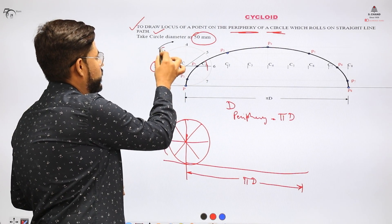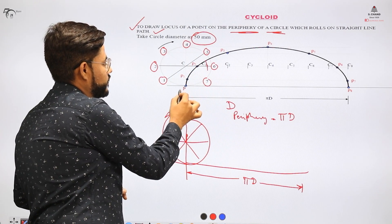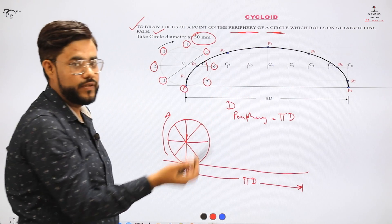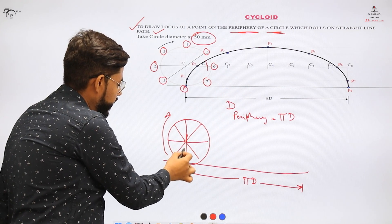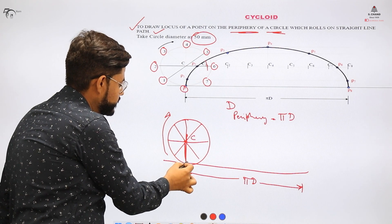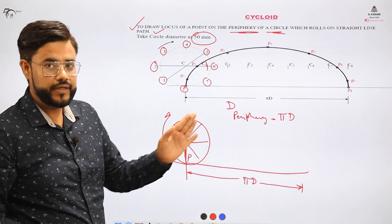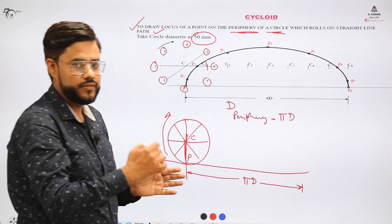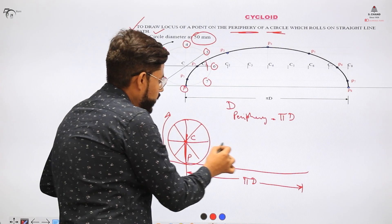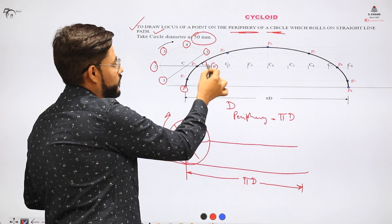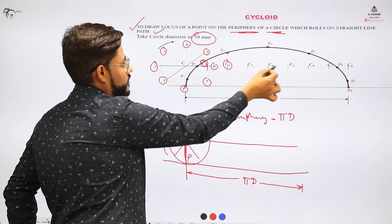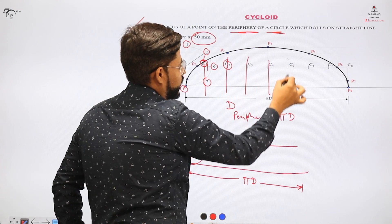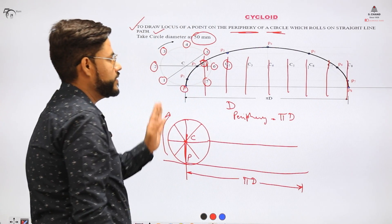The line is divided into 8 equal parts labeled C1, C2, C3, C4, C5, C6, C7, and C8. The circle points are named 1 through 7 with P as the eighth. We then extend lines from each division point on the line to create loci. Each division — 1, 2, 3, 4, and 5 — will have its own locus value.